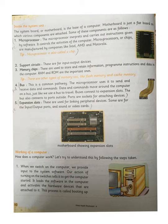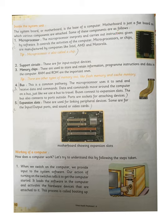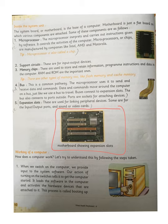Inside the system unit, the system board or motherboard is the base of a computer. The motherboard is a flat board on which various components are attached. As shown in the figure, the motherboard has five main components attached to it — these are the various parts you can see in the diagram.